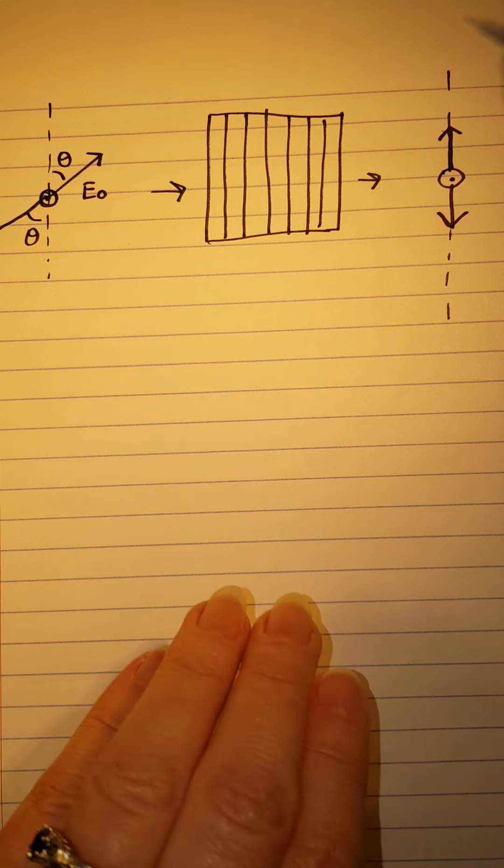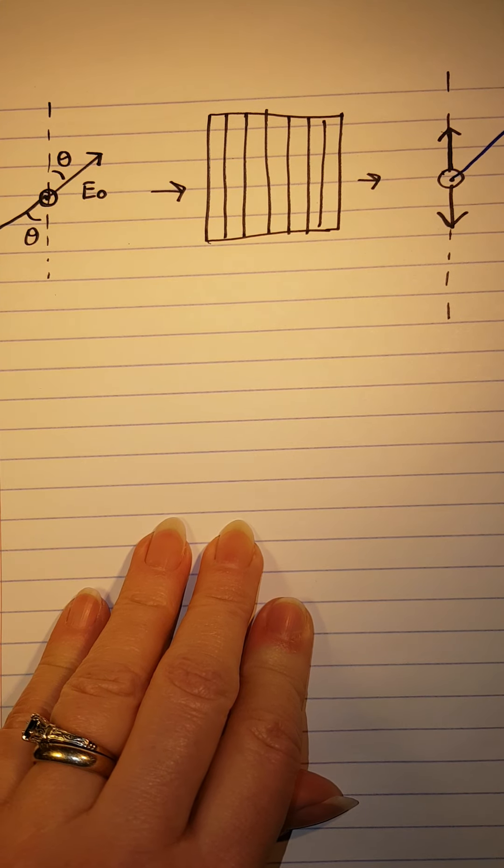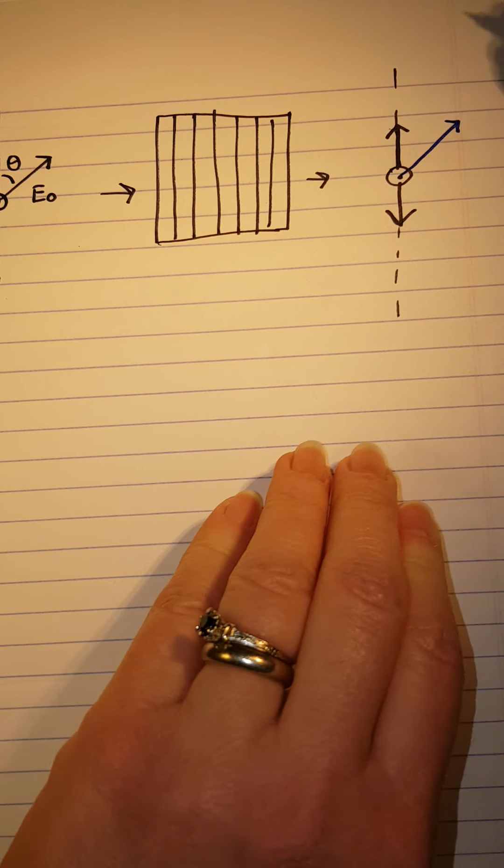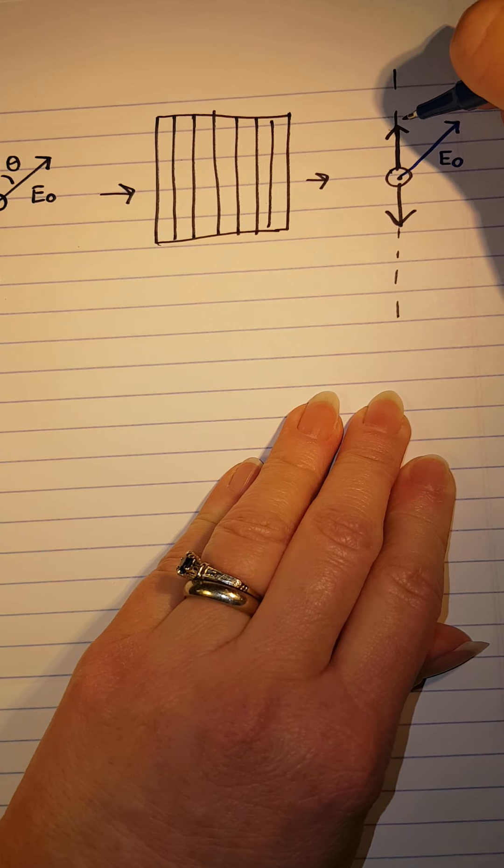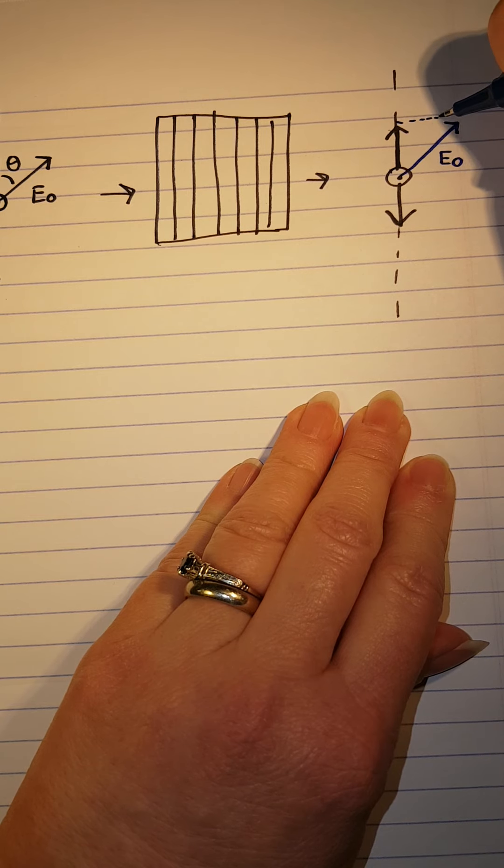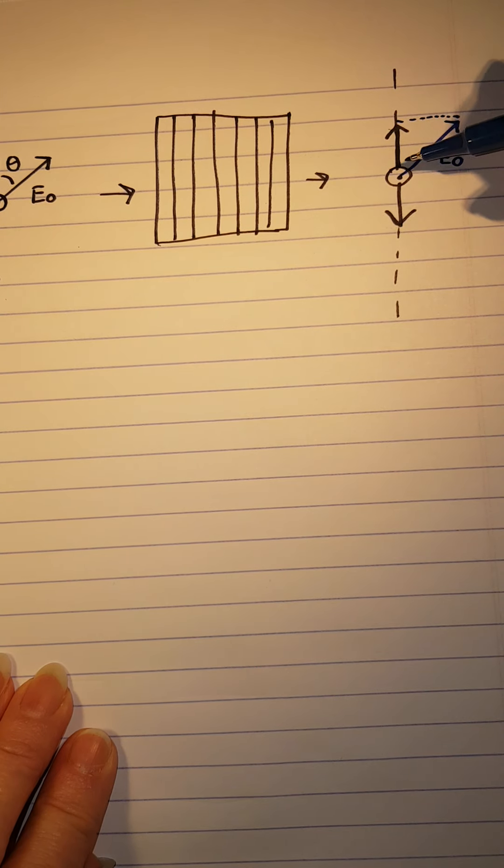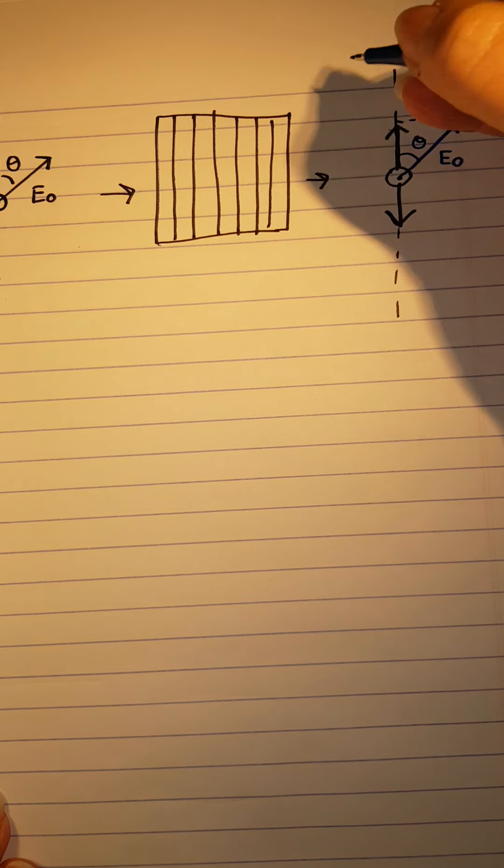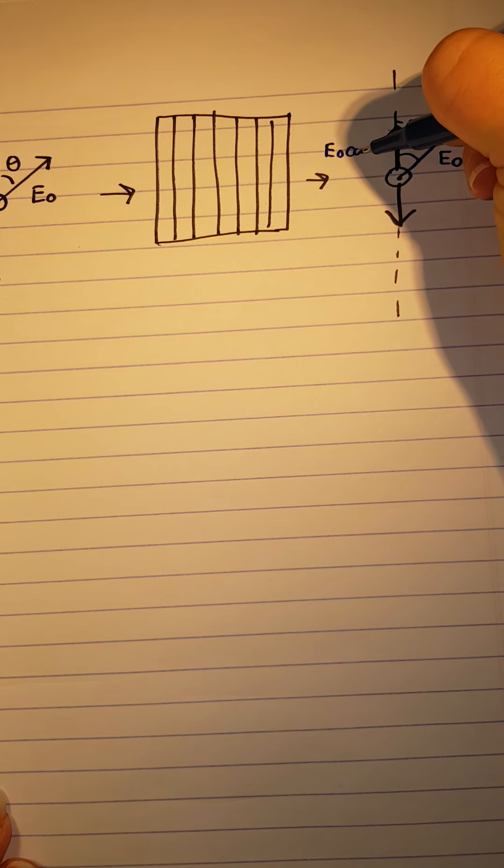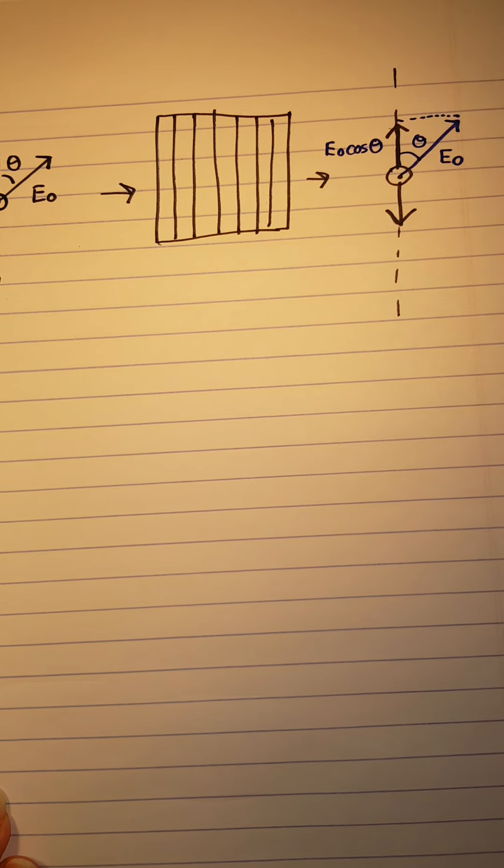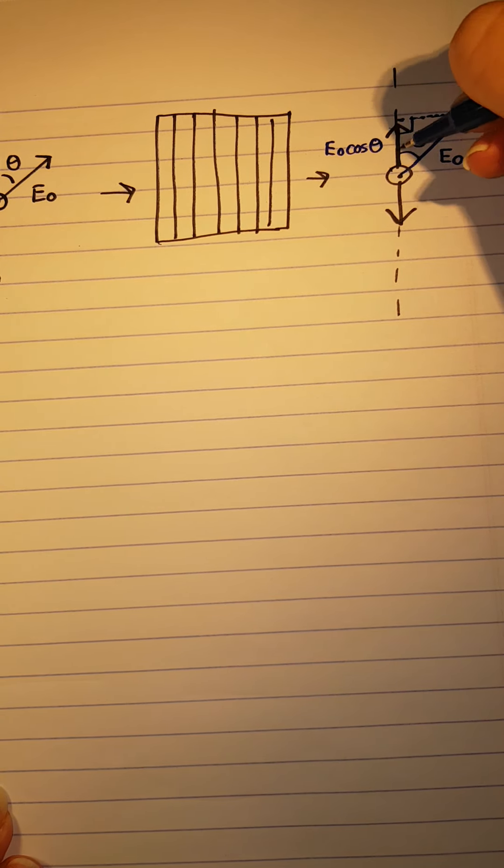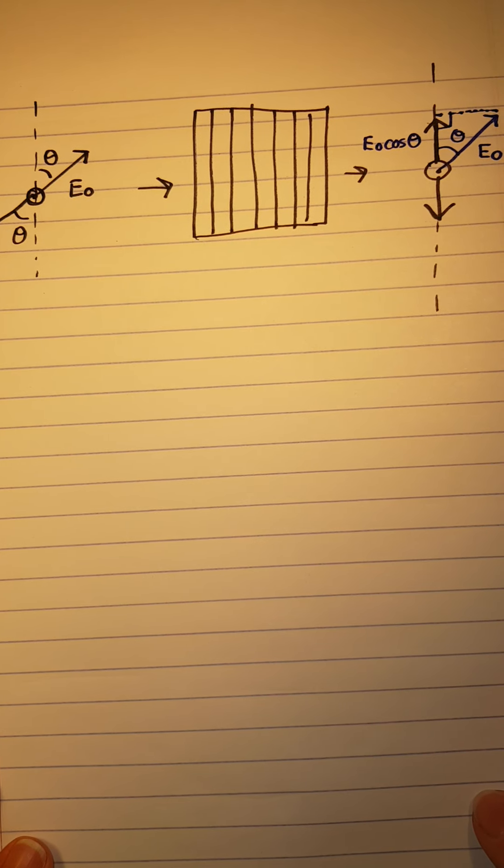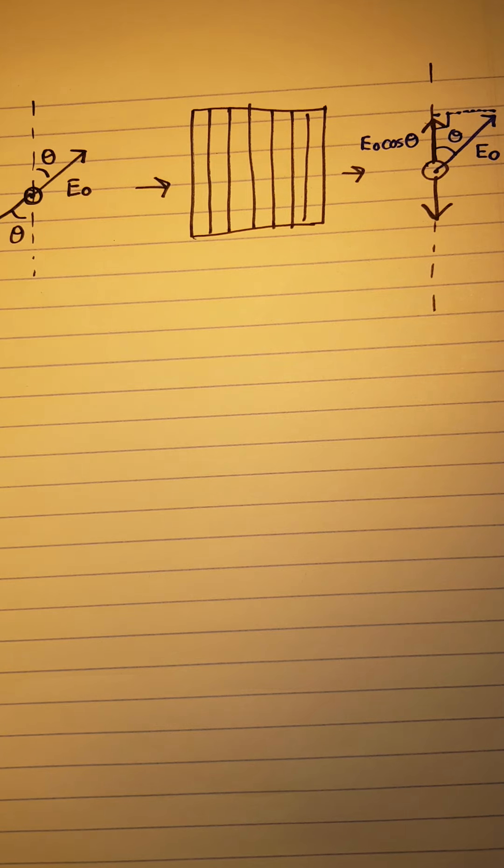is that if this, again, is our E zero, like that, then this component here along the transmission axis basically just depends on our angle theta, it's equal to E zero cosine of theta, right, because this is a nice little right triangle here, and that's the adjacent side to theta.